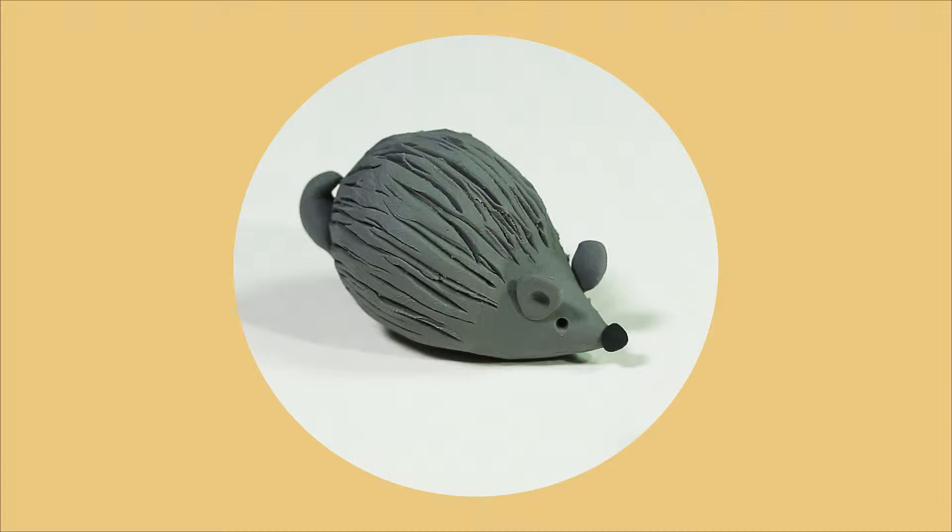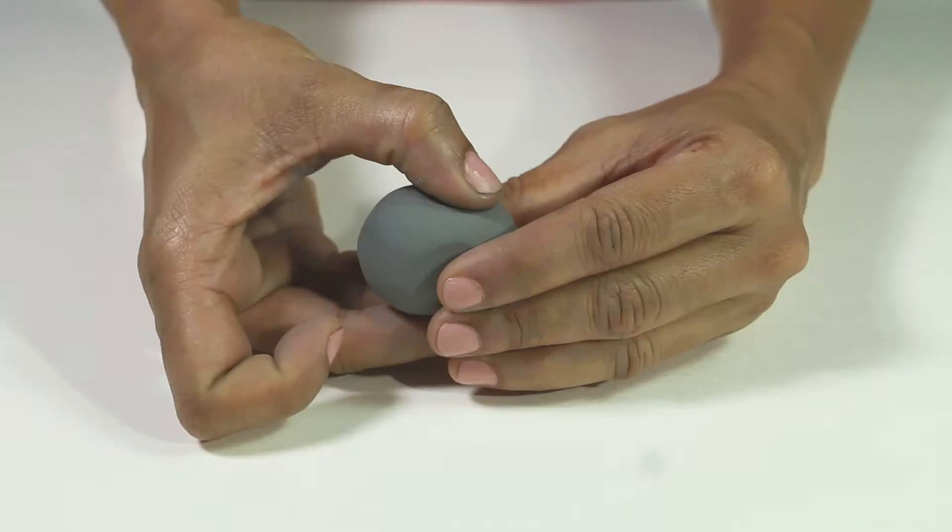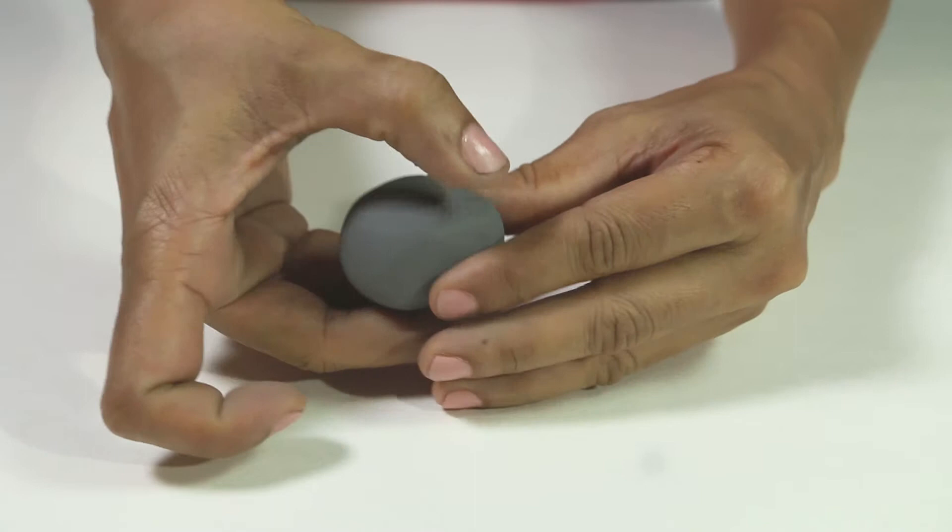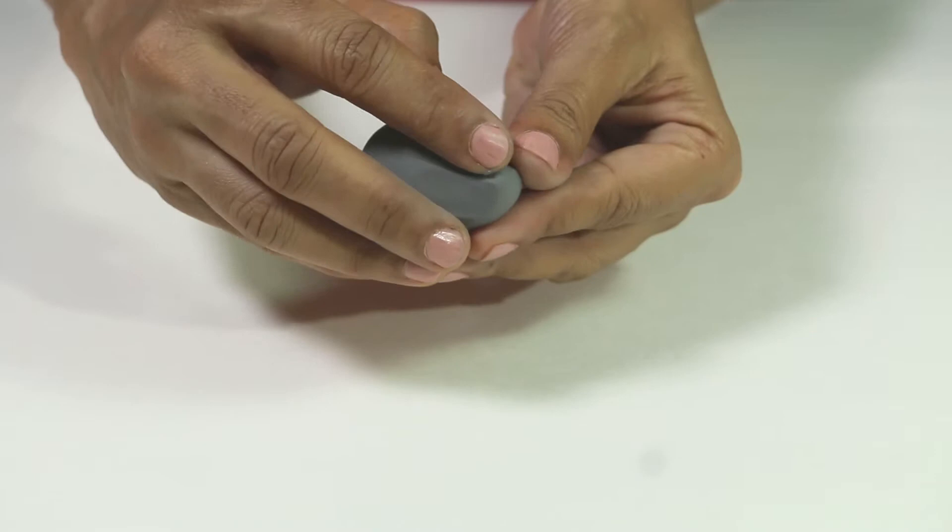I am making a porcupine today, a spiky little porcupine. Take a tennis ball sized grey colored non-air drying clay. But you may use any other clay or dough as well.